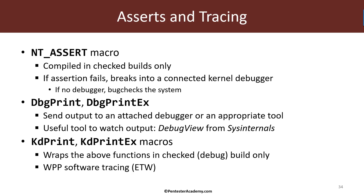Another common need is the ability to get some output without requiring a breakpoint — to see variable values or get textual information about which functions have executed. For this purpose, we have DbgPrint and DbgPrintEx. DbgPrintEx is the more modern function, and DbgPrint is implemented in terms of DbgPrintEx. They produce a textual string and support printf-style format specifiers, so you can use %d, %u, or other format codes to output information.